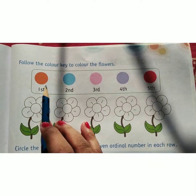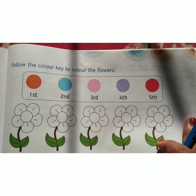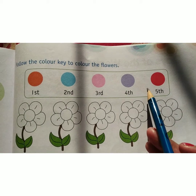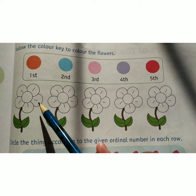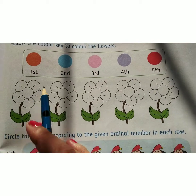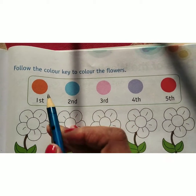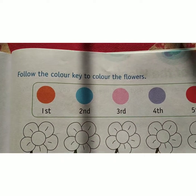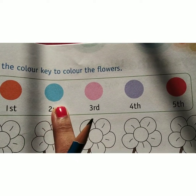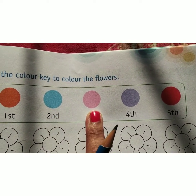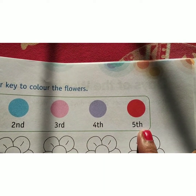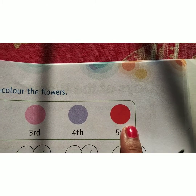Yani, yaha par colors diye huye hain. Yaha peh colors diye huye hain. Isi color pattern se aapko is flower ko bhi color karna hai. If I show you from closer, you can understand which color it is: first is orange, second is blue, third is pink, fourth is purple, and fifth is red in color.